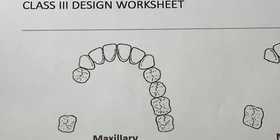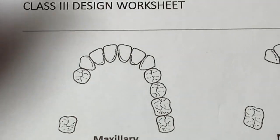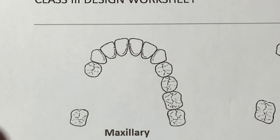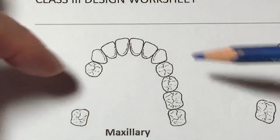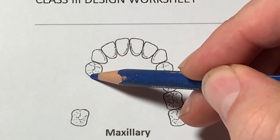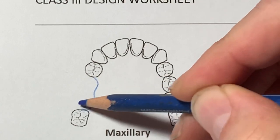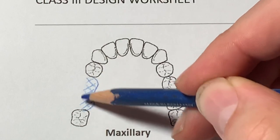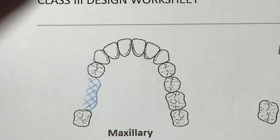We have the Kennedy Class 3 design worksheet, and we're going to go over the steps of design briefly without any clinical instructions. We're assuming all the undercuts are in the classic positions here. Step one is to outline the edentulous area and adhere those prosthetic teeth to the denture base, the acrylic denture base, to the metal framework with this mesh lattice retention.